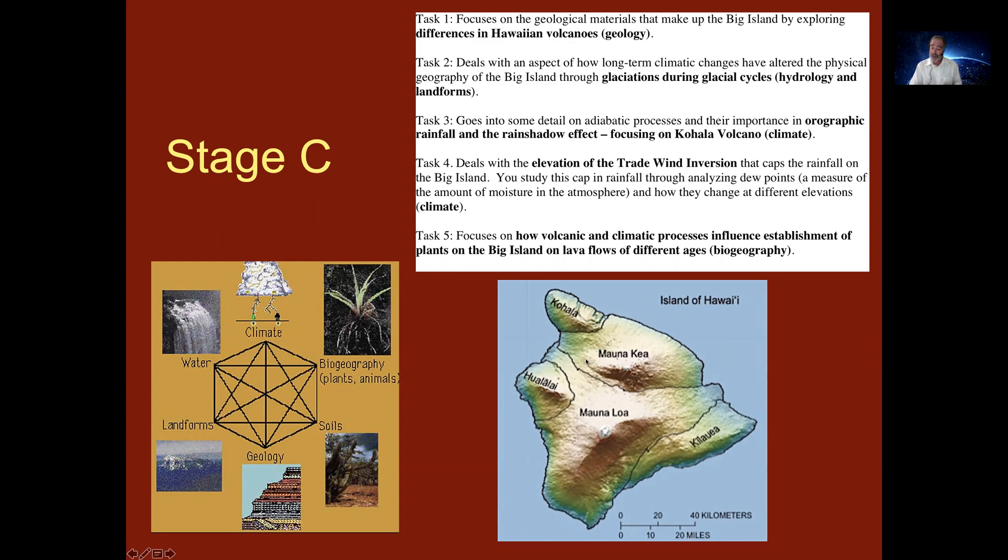Task one focuses on the geology component of the Hawaii volcanoes. Task two deals with hydrology and landforms, looking at glaciers that grew on top of Mauna Kea. Task three delves into climate, dealing with orographic rainfall and rain shadow effects. Task four explores the trade wind inversion, and task five deals with biogeography, in particular a classic topic of biogeography which is the establishment of plants.